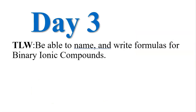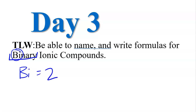Today is day three in unit three. We're going to name and write formulas for binary ionic compounds. Before we start, I want y'all to look at this word binary. If you say the word 'bi,' bi means two. So binary ionic compounds — two together make one compound.